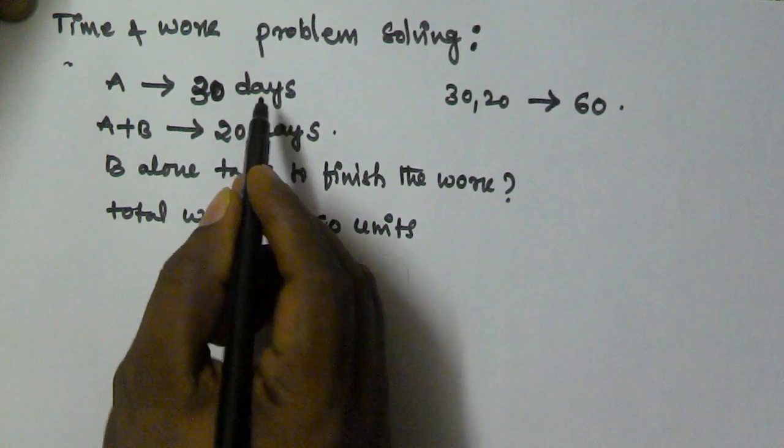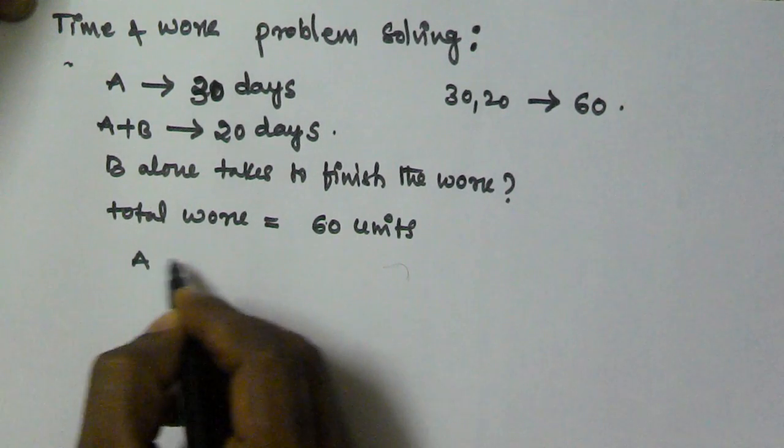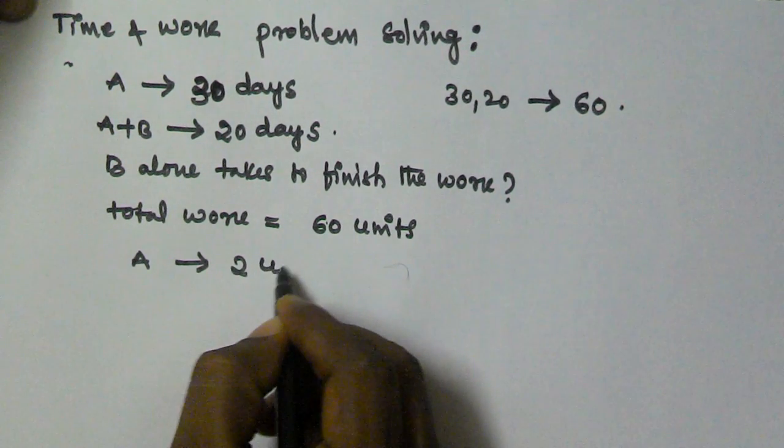A alone takes 30 days. That means A finishes 2 units per day.